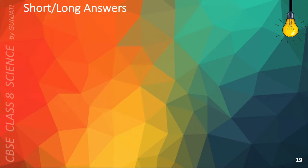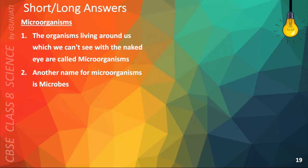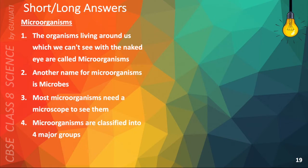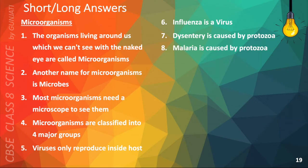The organisms living around us which we can't see with the naked eye are called microorganisms. Another name for microorganisms is Microbes. Most microorganisms need a microscope to see them. Microorganisms are classified into four major groups. Viruses only reproduce inside the host. Influenza is a virus. Dysentery is caused by a protozoa. Malaria is caused by a protozoa.